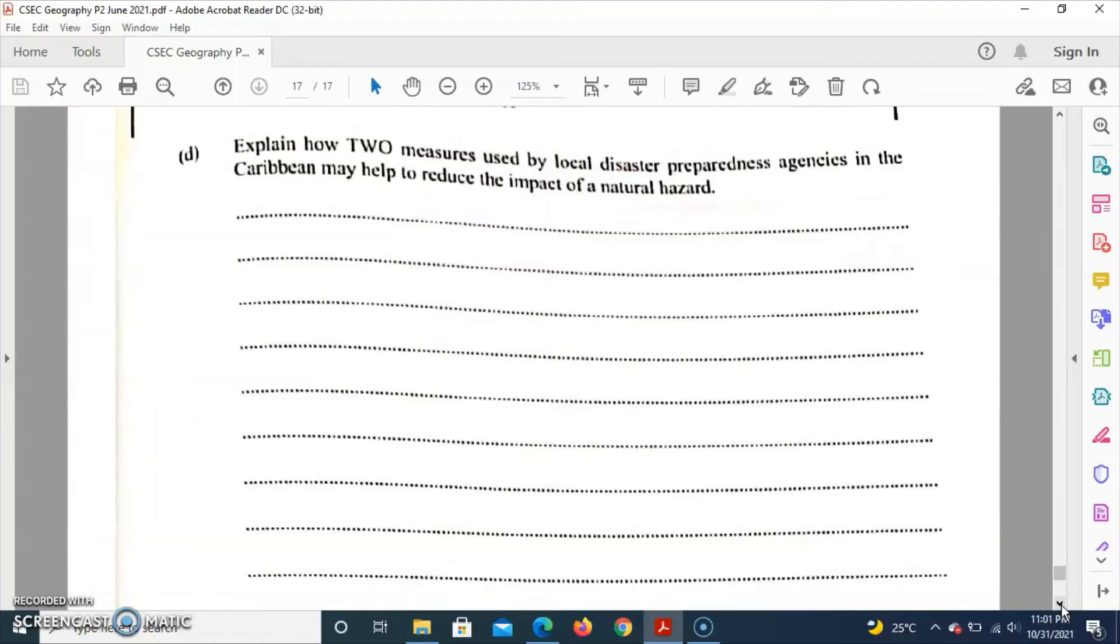Part D asks us to explain how two measures used by local disaster preparedness agents in the Caribbean may help to reduce the impact of hazards. The measures include, first, education. These local agencies educate the population about the different types of hazards using different mediums such as television and radio. They tell us what to do before, during, and after the natural hazard in an effort to have us prepared and thus reducing the impact that the hazard may have on the population.